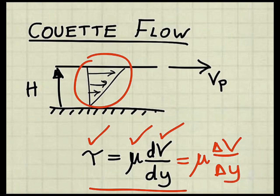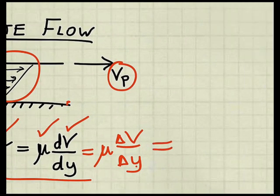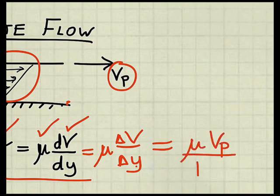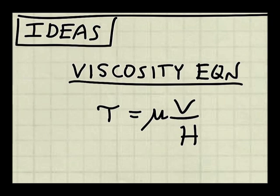The change in velocity is the velocity of the plate minus zero, the velocity of the wall here, and the change in distance is h. So this becomes mu times the velocity of the plate divided by the gap thickness h. So whenever you have Couette Flow, instead of using the general equation relating shear stress and viscosity, use this equation right here. To find a viscosity equation, let me do term-by-term analysis.